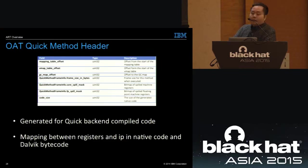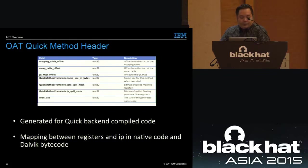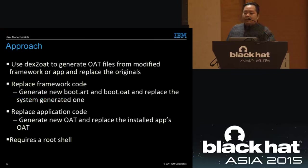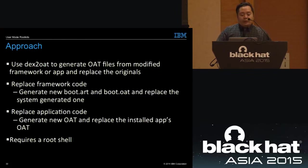There's more detail in the accompanying paper downloadable from the Black Hat website. Now, the core of this talk: user mode rootkits. Our approach is to use dex2oat to generate OAT files from modified framework or app code and replace the original one. We have two options: replace framework code and generate a new boot.art and boot.oat to replace the system-generated one, or replace a specific application's code, generate a new OAT for that app, and replace its installed OAT file. Root is required for both.